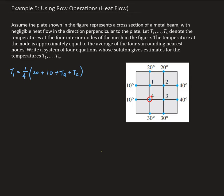Moving to the second node: node 2 has node 1, two boundary points, and node 3 as its surrounding points. So the temperature at node 2 is T2 = one-fourth of (20 + 40 + T1 + T3).